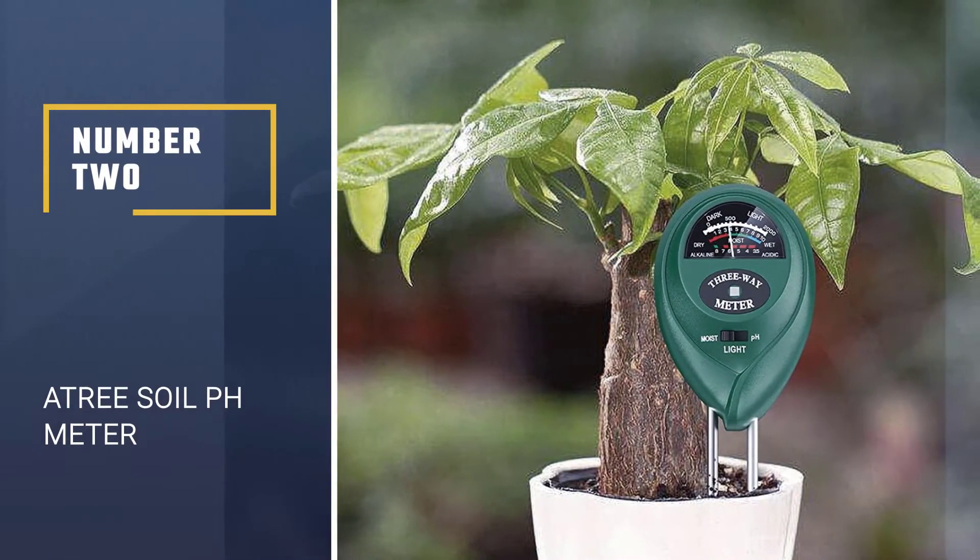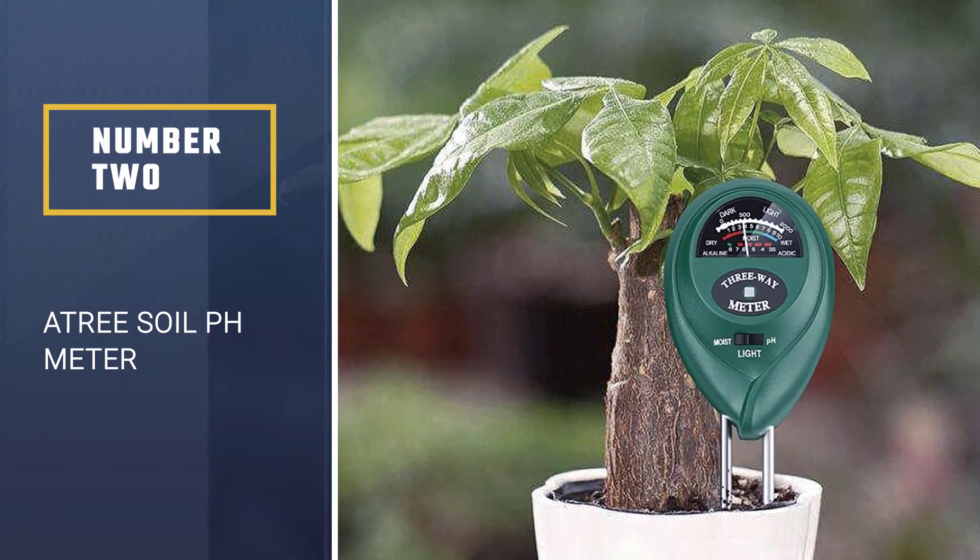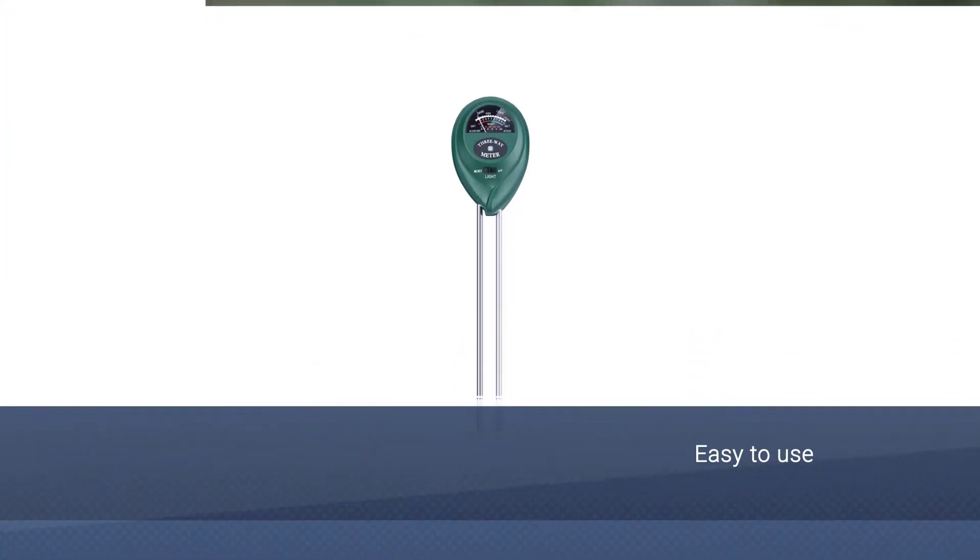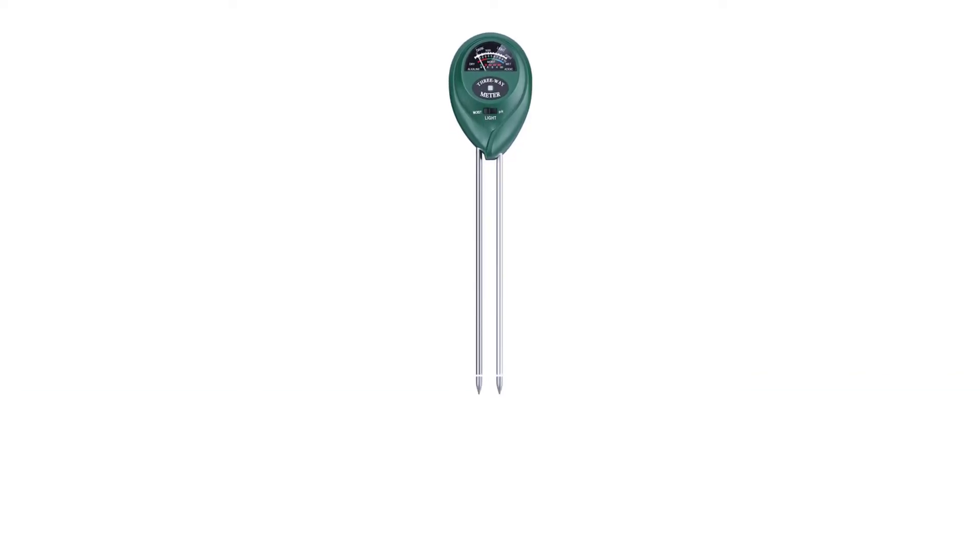Number two: Atree Soil pH Meter. The Atree Soil pH Meter makes sure that your outdoor and indoor plants have the right soil pH levels, adequate moisture content, and adequate sunlight. Using the tester is so easy and there are no batteries required.